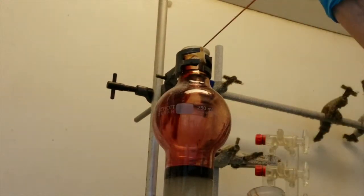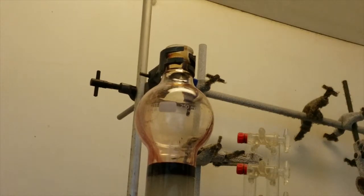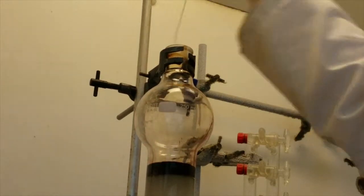Rinse the round bottom flask out with a small amount of dichloromethane and then use this to wash any product still remaining on the sides of the column so that everything is loaded onto the silica.